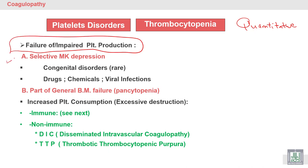Impaired production may be selective megakaryocyte depression or part of general bone marrow failure, called pancytopenia — pancytopenia means decrease in platelets, decrease in red blood cells, and decrease in white blood cells. While selective failure affects platelets only, and may be congenital or caused by drugs, chemicals, or viral infection.